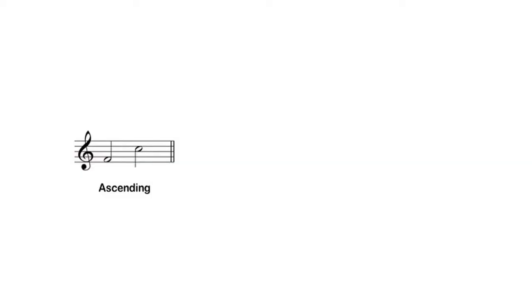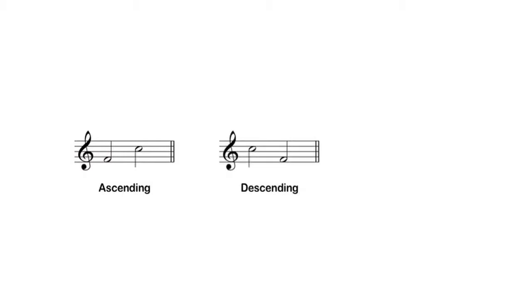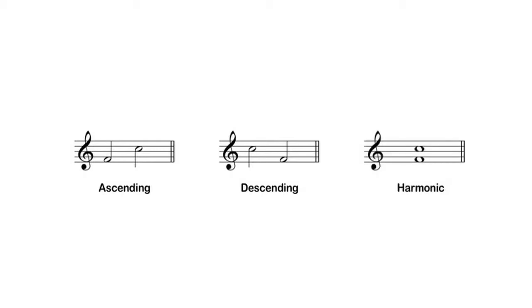When we talk about an interval's direction, there are three possibilities. Intervals can ascend, going from the low pitch to the high pitch. They can descend, going from the high pitch to the low pitch. Or they can be played harmonically, where both pitches sound simultaneously.